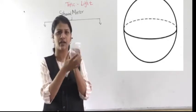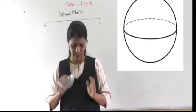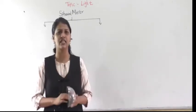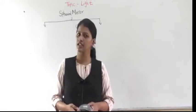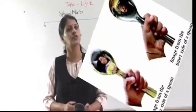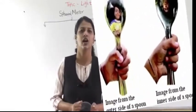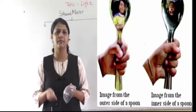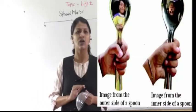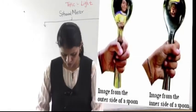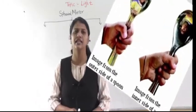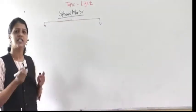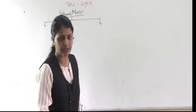Now see — this is the outer part and this is the inner part, and both are the reflecting parts. Have you seen a spoon? You can see both parts of the spoon — one part is curved inward and the other is the outer curve. These are the parts of a spherical mirror.